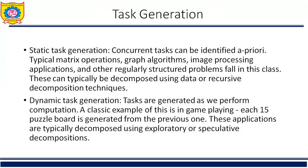Certain decompositions lead to dynamic task generation during the execution of the algorithm. In such decompositions, the actual tasks and the task dependency graph are not explicitly available prior to the algorithm, although the high-level rules governing task generation are known as part of the algorithm. Recursive decomposition can lead to dynamic task generation. For example, in quicksort, tasks are generated dynamically and the size and shape of the task tree is determined by the values in the input array to sort. An array of the same size can lead to task dependency graphs of different shapes and with a different total number of tasks.